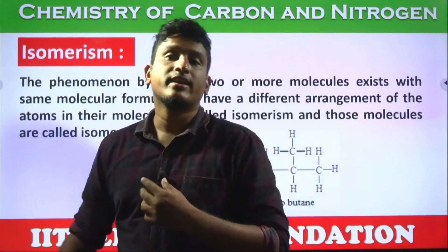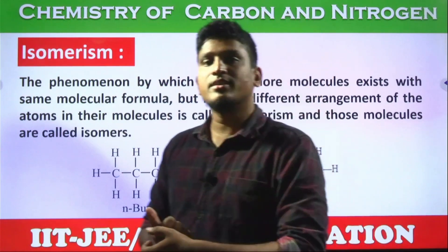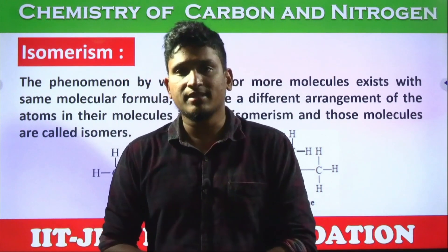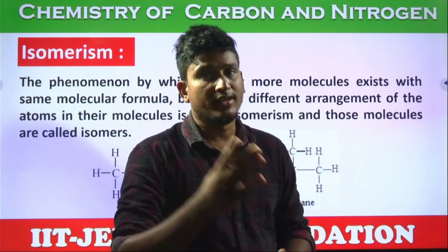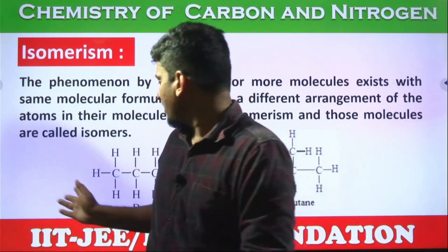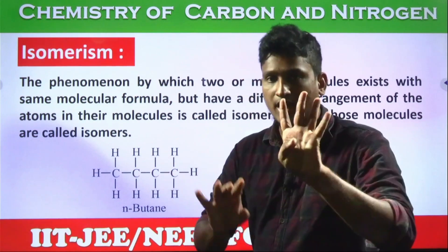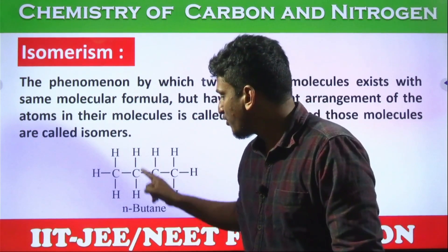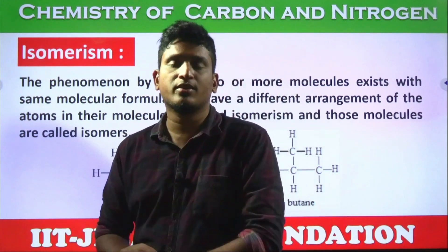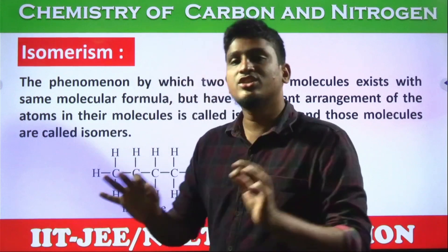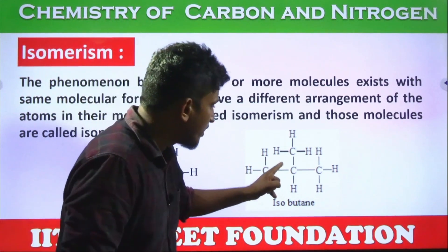Next is isomerism. Isomerism is a phenomenon where some compounds have the same composition in terms of the number of atoms but are different compounds. For example, look at this compound: four carbons and ten hydrogens — the formula is C4H10. Now look at another compound: also four carbons — one, two, three, four — and ten hydrogens.